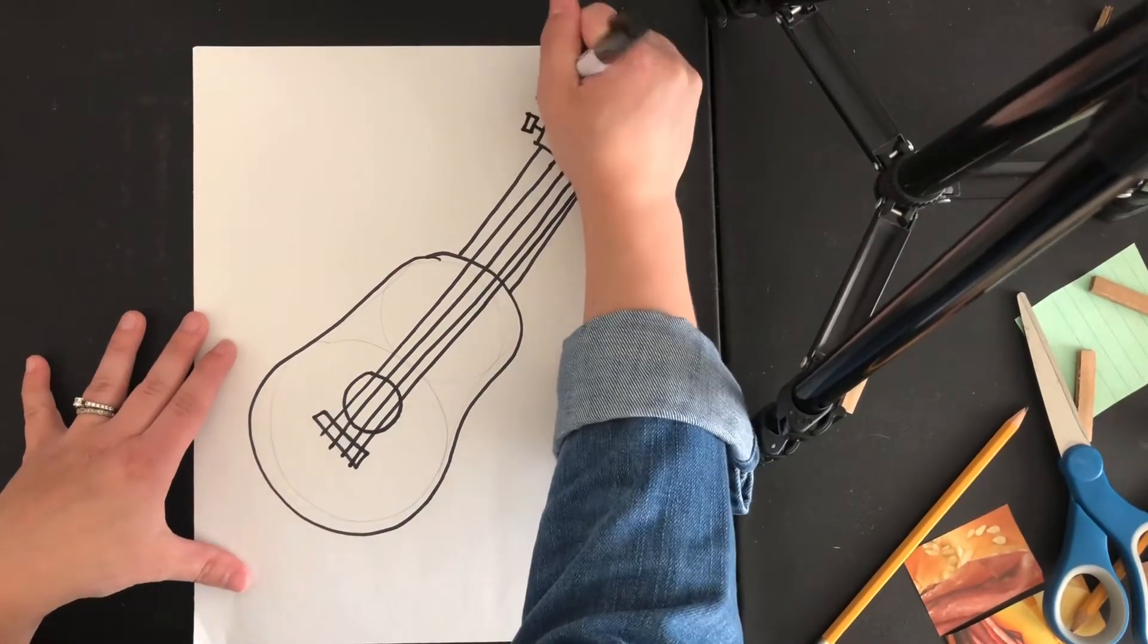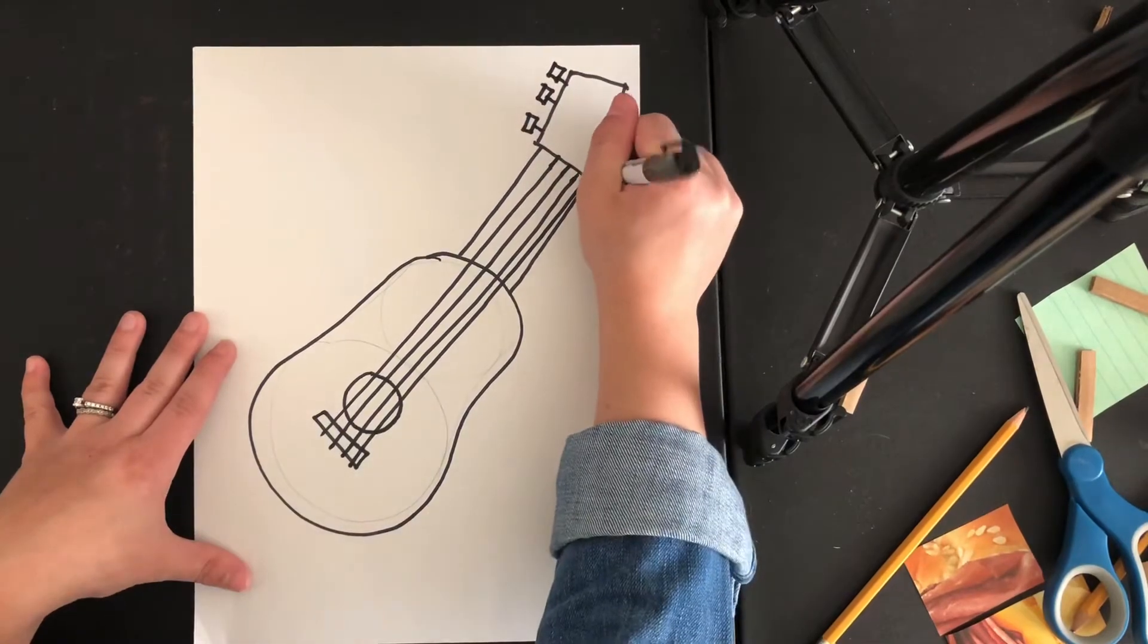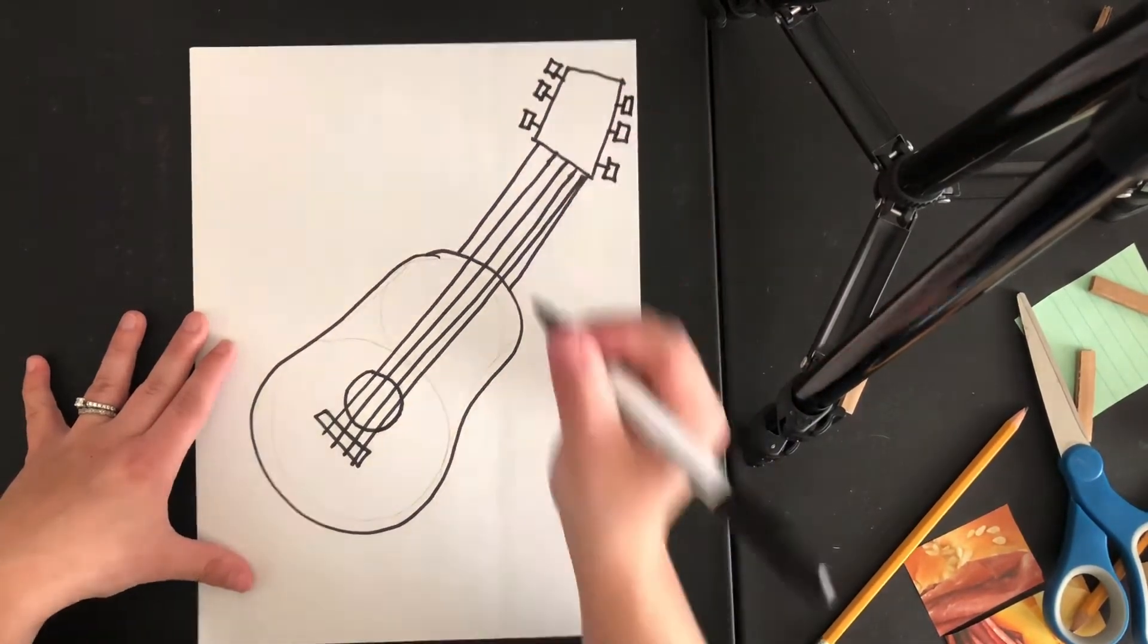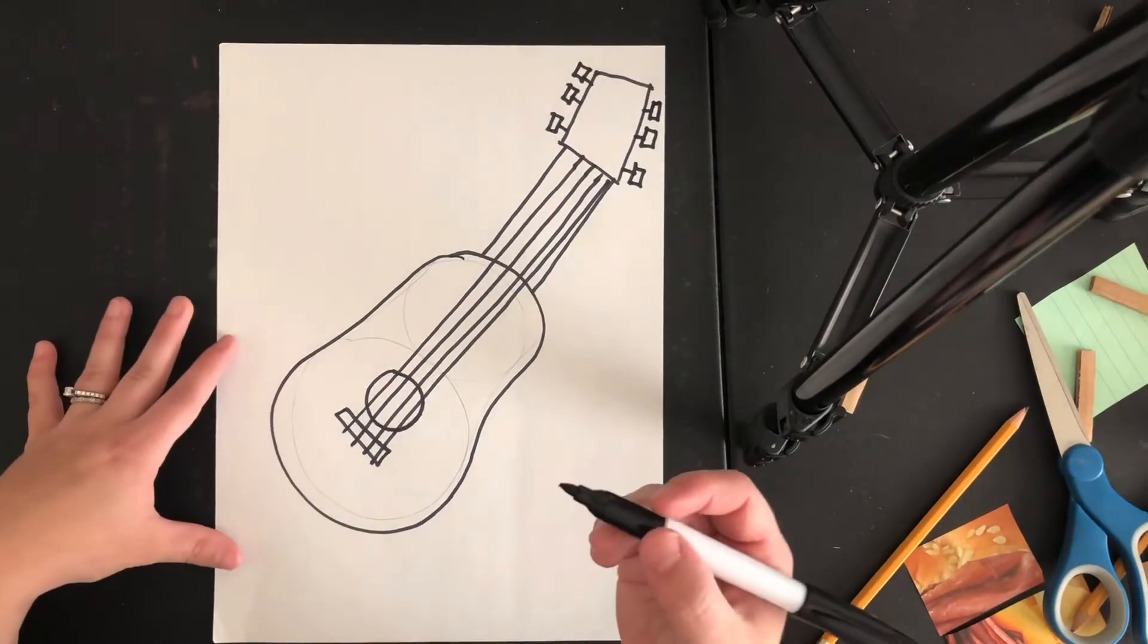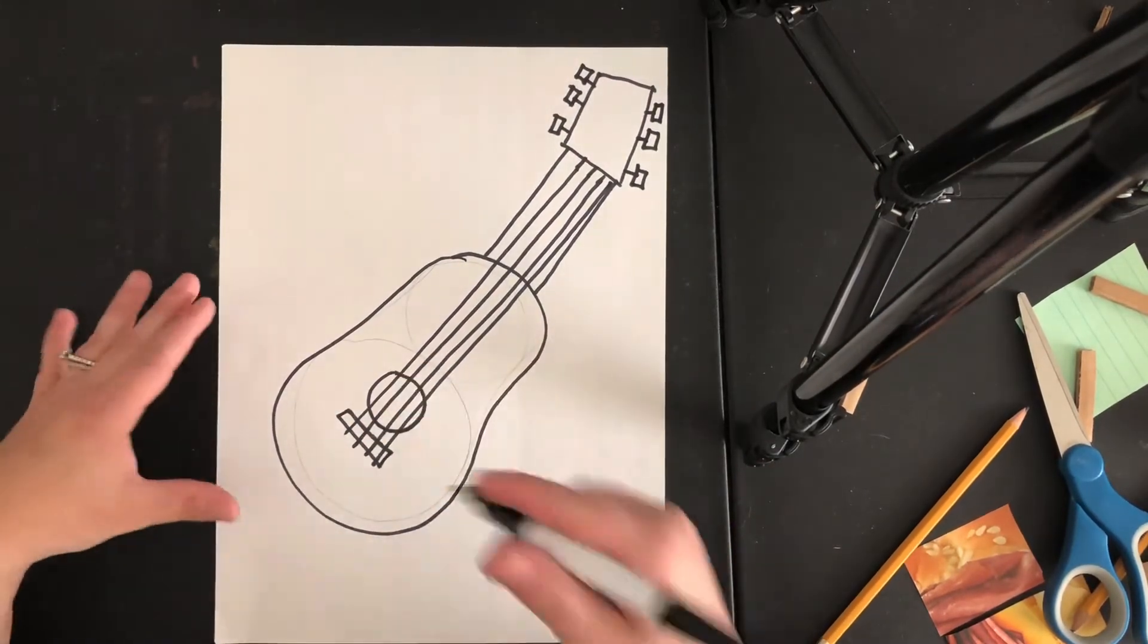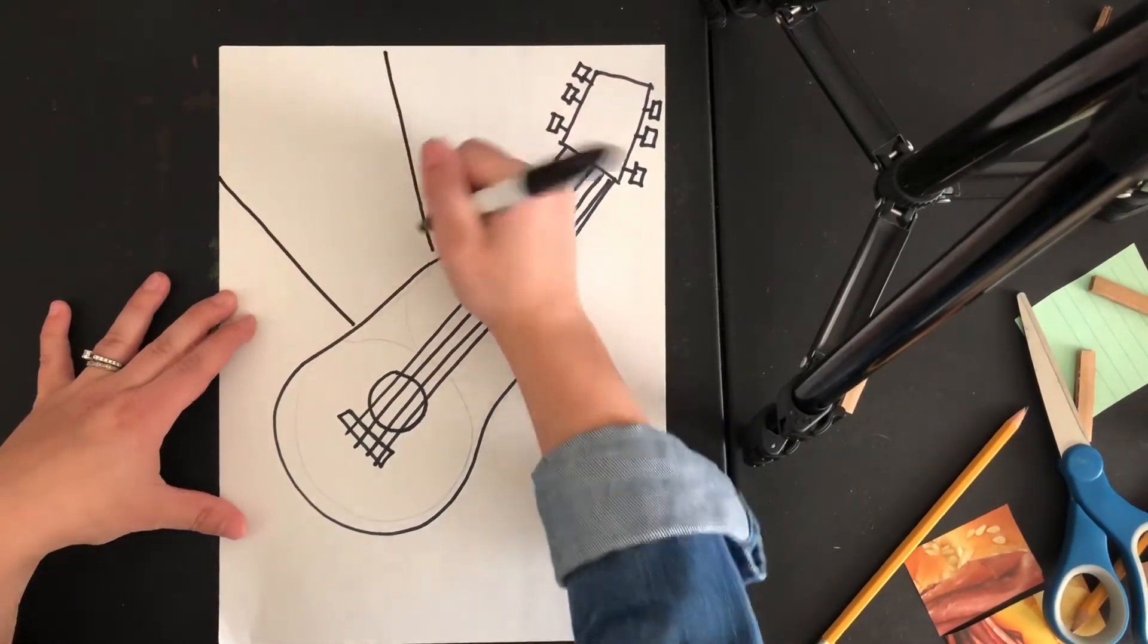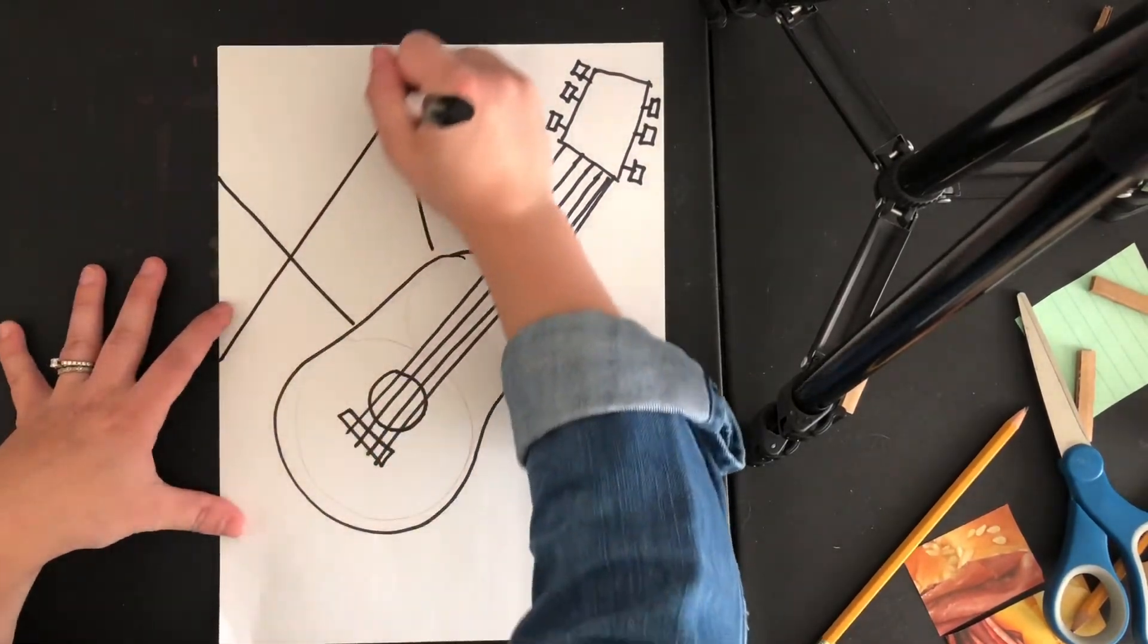And this doesn't have to be accurate. We know that Picasso did a lot of abstract pieces when creating art. So really, we just want to create this idea or illusion that we have a guitar.